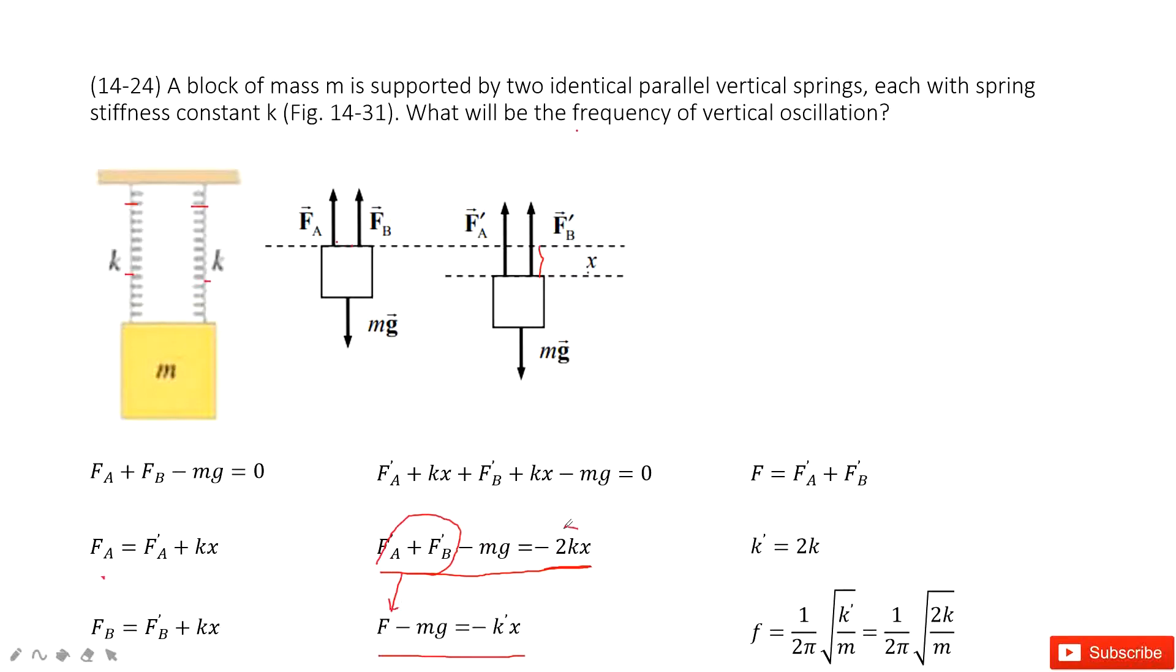And the 2k can be replaced as the equivalent k. So in this way, we can write it as the simple harmonic motion function. This is how we replace it.